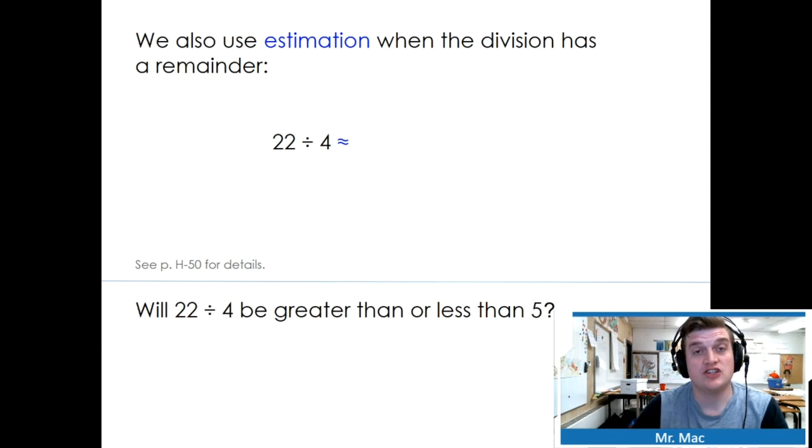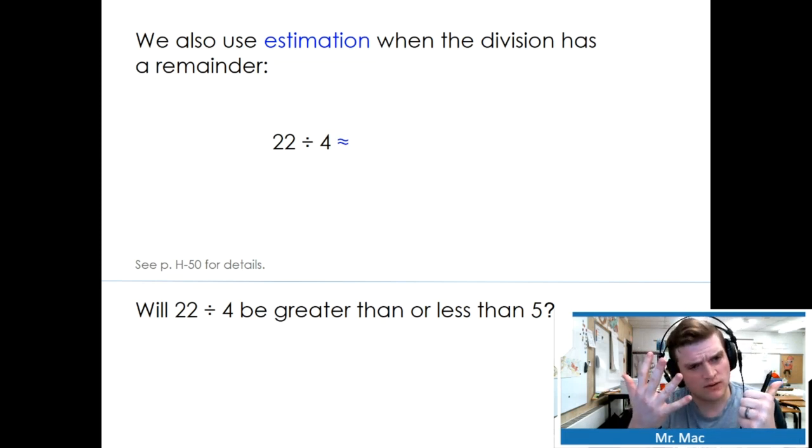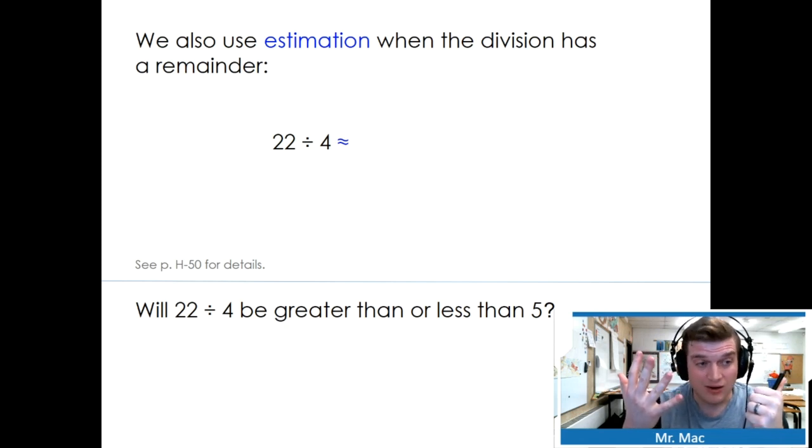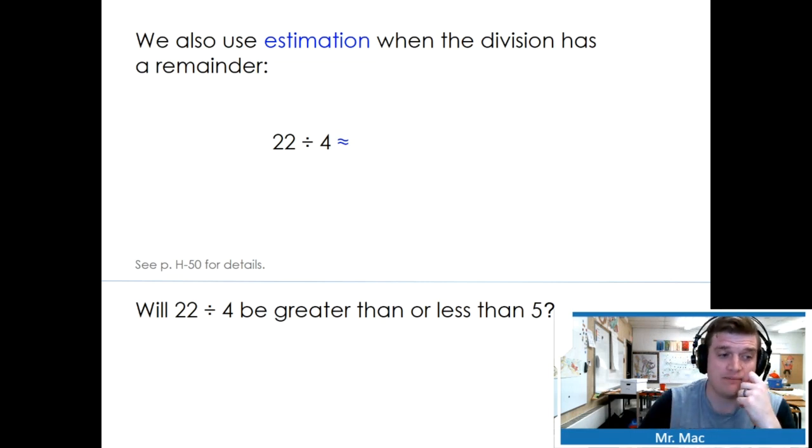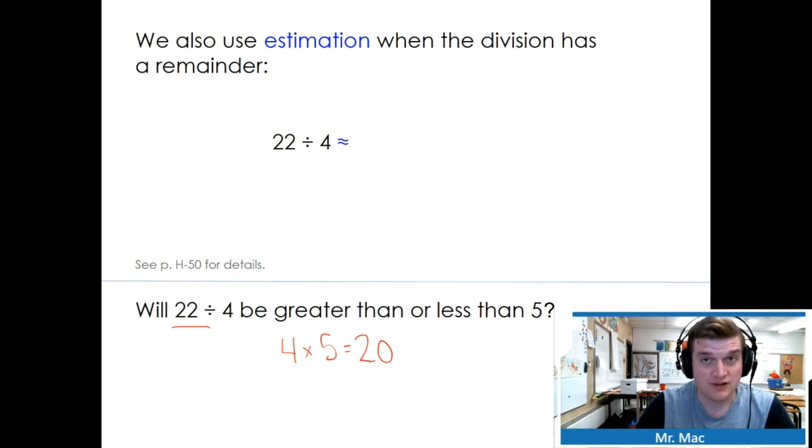We also use estimation when the division has a remainder. 22 divided by 4, if we skip count, 4, 8, 12, 16, 20, 24, we know that it equals about 5 or 6. Will 22 divided by 4 be greater than or less than 5? Since 4 times 5 equals 20, we know 22 is greater than 20. Our estimate will be less than our actual.